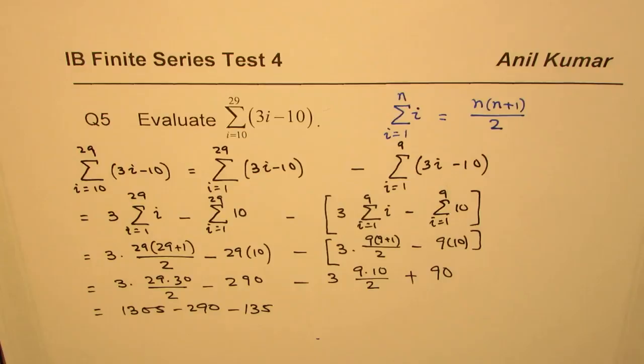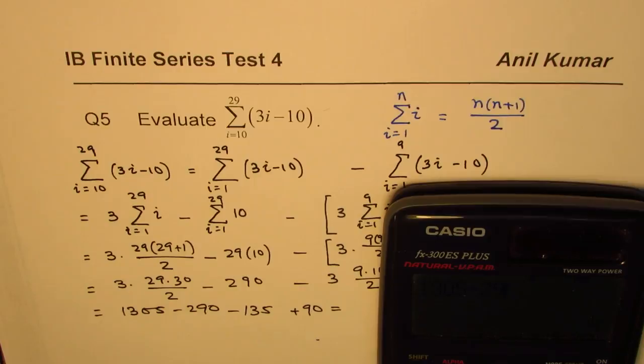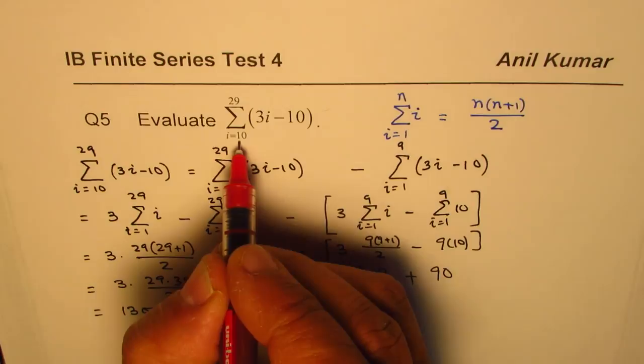So we have plus 90 here. And now let's calculate, we could have done it in one shot also. 1305 take away 290, take away 135, and add 90 to it to get the answer 970. So we get 970 as our answer. So that is how such questions can be done.